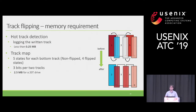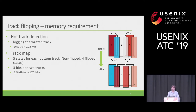Since we implement track flipping in the firmware, we must be careful about memory usage. We log the written tracks within each period, using only about a quarter of a megabyte in our experiments. For the track map, each bottom track can have five states: unmoved, or flipped with the right or left neighbor — requiring three bits per two tracks. For a 20 terabyte drive, that's about two and a half megabytes to store the track map.